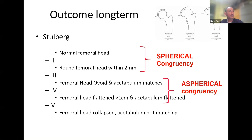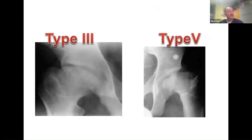The terms we use are spherical congruency and aspherical congruency — essentially, is it a round ball in a round socket, or is it a square peg in a round hole? Type 3 is ovoid but the socket matches, whereas type 4 is an irregular shape that doesn't match the socket — that's a poor outcome.